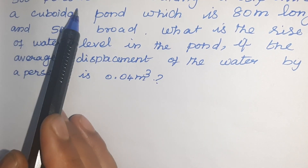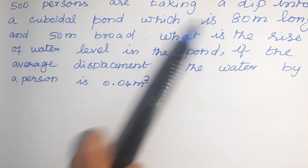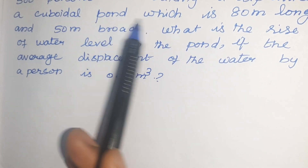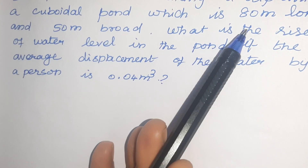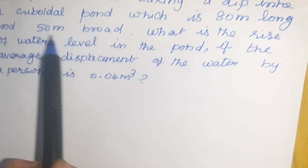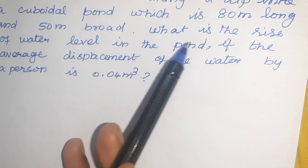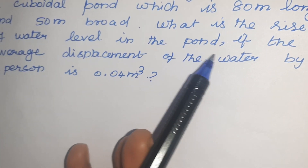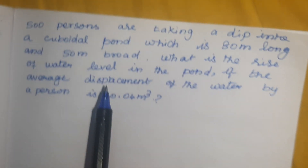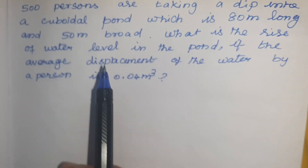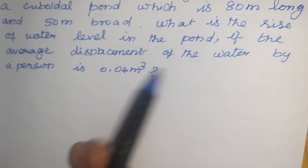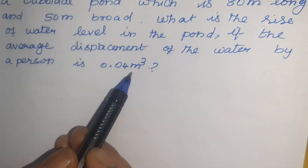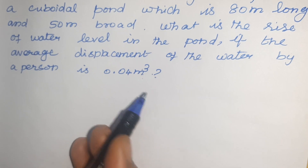500 persons are taking a dip into a cuboidal pond which is 80 meter long and 50 meter broad. What is the rise of water level in the pond if the average displacement of the water by a person is 0.04 meter cube?